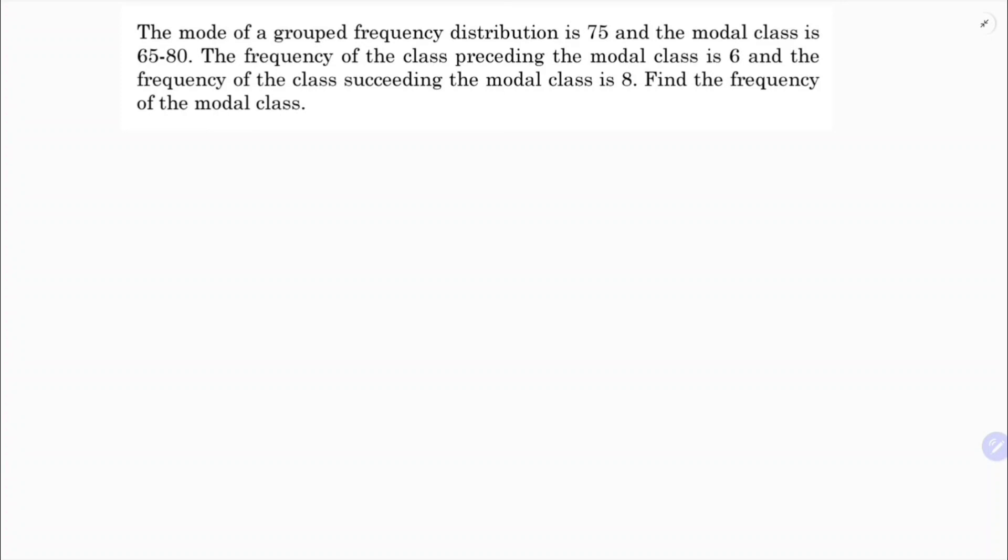The mode of a grouped frequency distribution is 75, so here mode is 75. The modal class is 65 to 80. The frequency of the class - the modal class is 65 to 80, so we'll select the modal class.